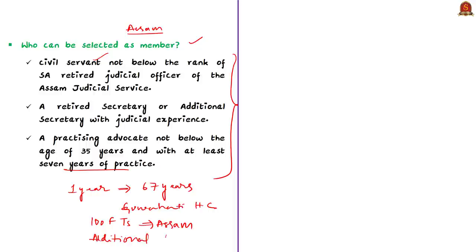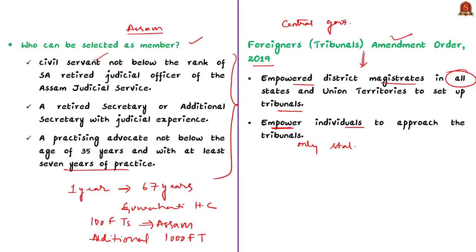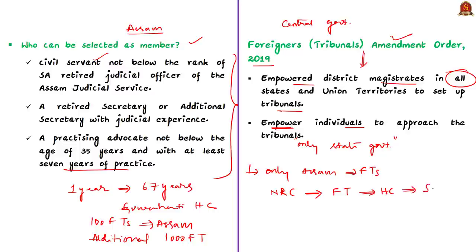The union government amended the Foreigners Tribunal Order of 1964. As per the recent amendment, it empowered district magistrates in all states and union territories to set up Foreigners Tribunals — previously this power was vested only with the central government. The amended order also empowered individuals to approach the tribunals, whereas earlier only the state administration could move the tribunal against an illegal foreigner. In reality, this amendment is most relevant to Assam, as it is currently the only state with working Foreigners Tribunals. People left out of the NRC can directly approach these tribunals, and tribunal orders can be appealed in the High Court, and further to the Supreme Court as per the Chandra Kumar case of 2006.